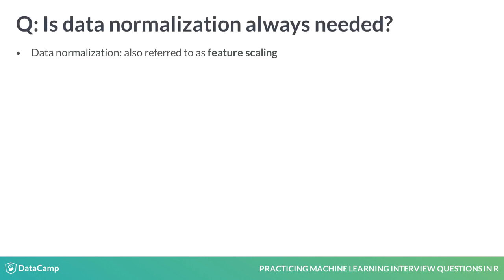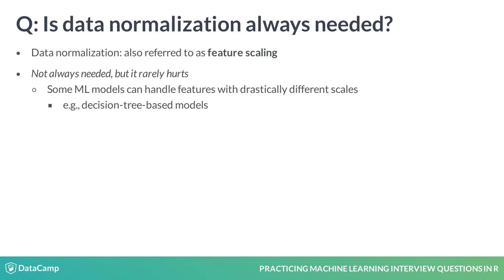Data normalization, also called feature scaling, is an important step in your data pre-processing pipeline. Although it is not always needed, most of the time it will be beneficial to your machine learning model. Decision trees, for example, can deal quite well with features having dissimilar and disproportionate scales.